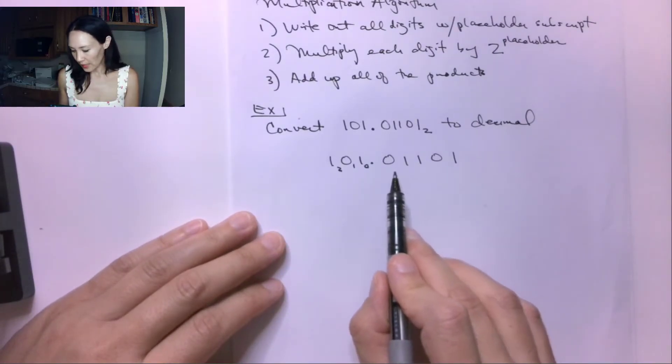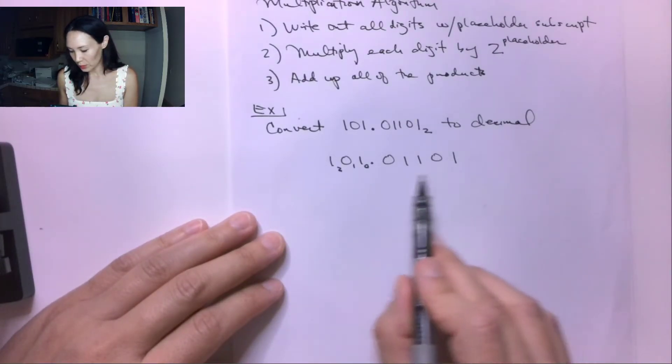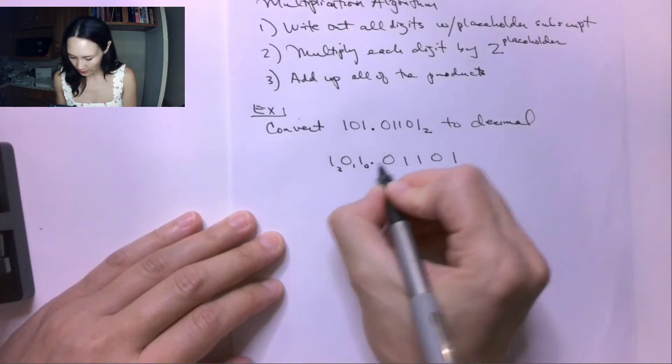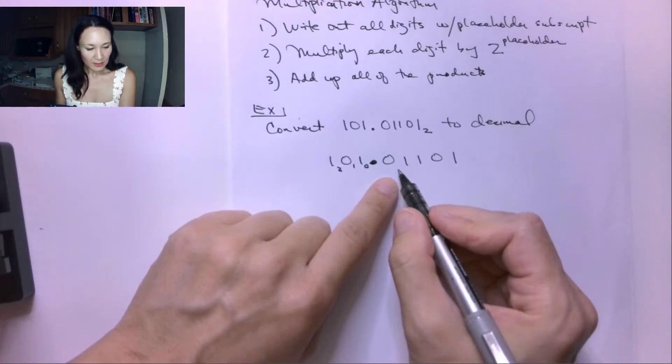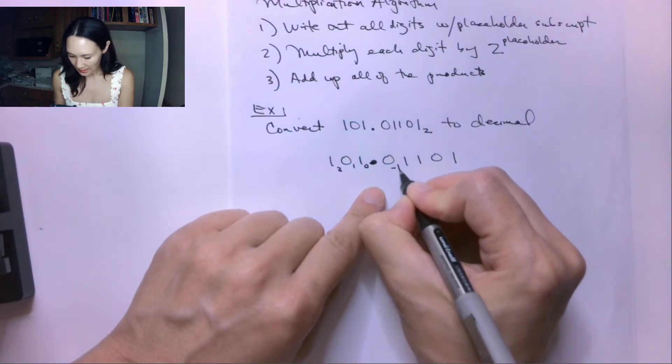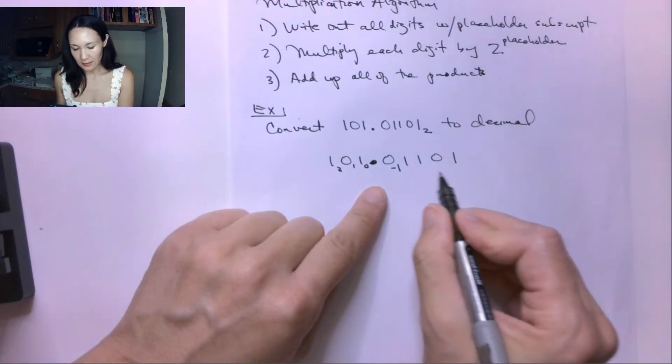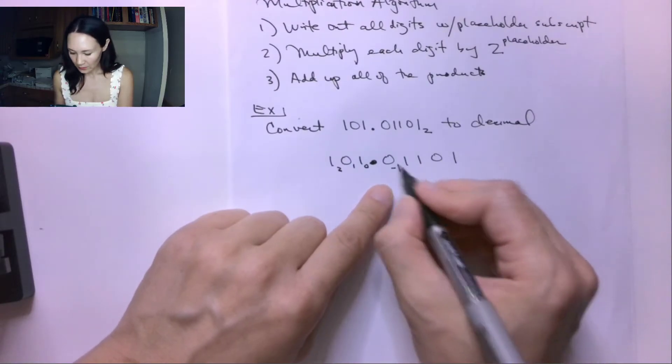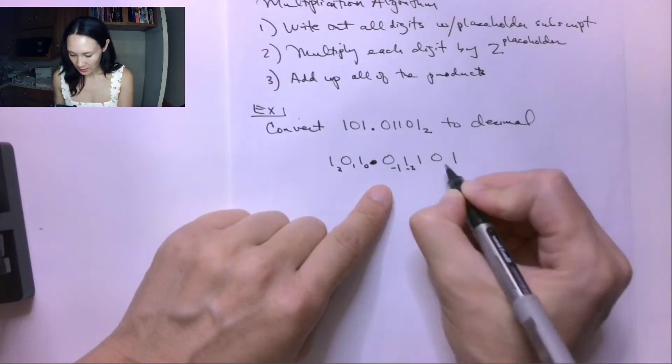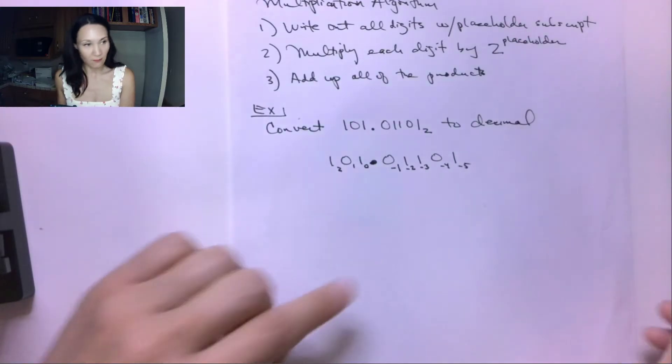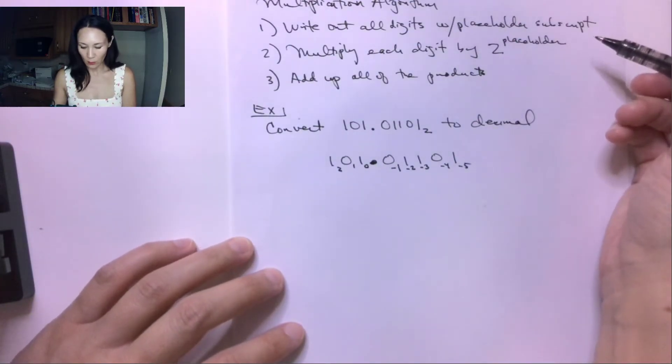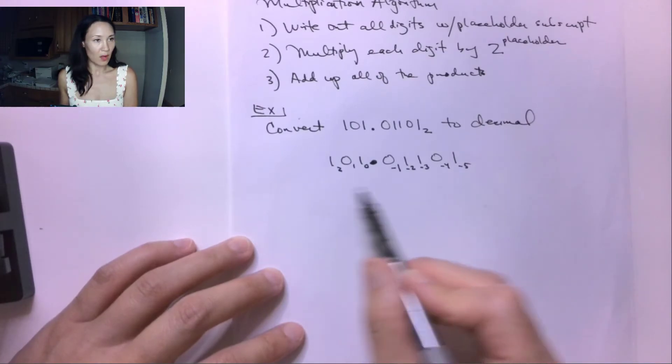So now, how do we handle these digits to the right of the decimal point? To the right of the decimal point, this first placeholder subscript is a negative 1, and this is going to get smaller as we move to the right. So it gets a negative 1, this gets a negative 2 subscript, negative 3, negative 4, and negative 5. That's our step number 1, write the subscripts for all of our digits.